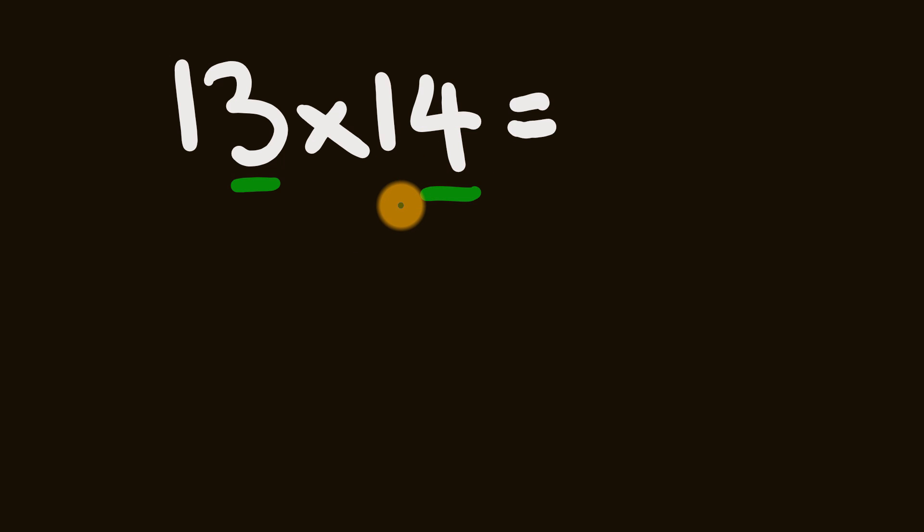So for 13 we have a units digit of 3, and for 14 we have a units digit of 4. Now what we're going to do is we're going to add one of these numbers to the other one's units digit. So either 13 plus 4 or 14 plus 3, pretty simple. And you'll get the same answer, so 13 plus 4 is 17.